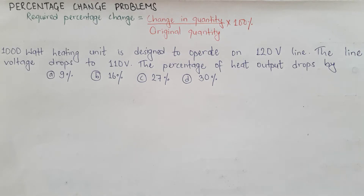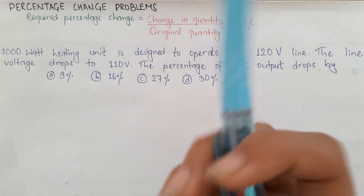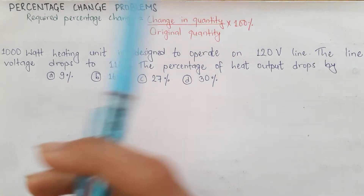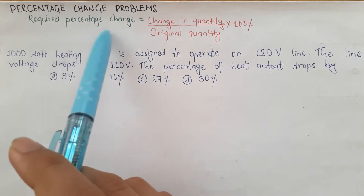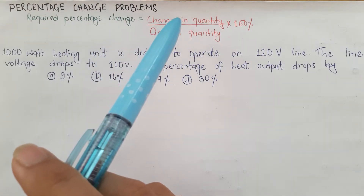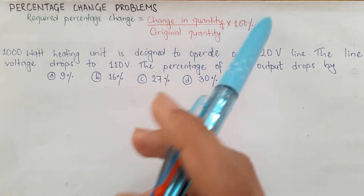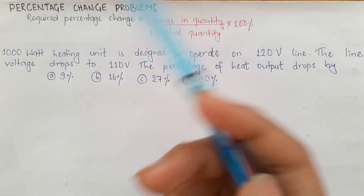Hi guys, welcome to TNT PKT. Today we will be talking about percentage change problems required in objective type problems. The formula is: required percentage change equals change in quantity divided by original quantity, into 100%. This is the universal formula.